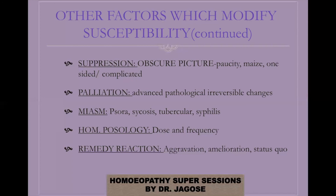Regarding homeopathic pathology and potency selection: in order to select the correct potency, we have to judge the state of susceptibility. Higher susceptibility means higher potency; lower susceptibility means lower potency. Regarding dose: in an acute condition, susceptibility gets exhausted very fast, so frequent repetition is necessary. In a chronic condition, give a dose, wait and watch the reaction — if no reaction is there, multiple dose stimulation can be given.